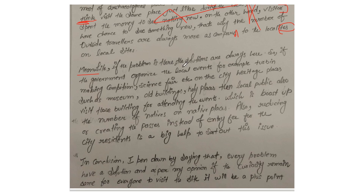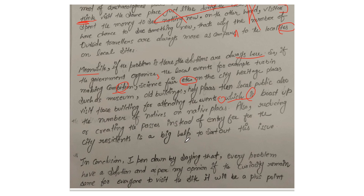BP2: Meanwhile, if the problem is there, solutions are always there. If the government organizes local events — for example, a turban-making competition, science fair, etc. — at city heritage places such as museums, old buildings, and holy places, local people will also visit those places to attend the event. This will boost the number of natives visiting heritage places. Also, creating passes instead of an entry fee for city residents is a big help.